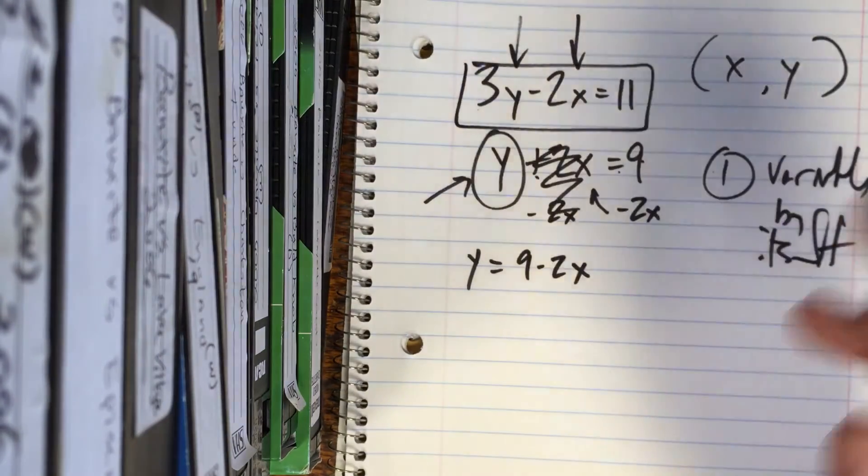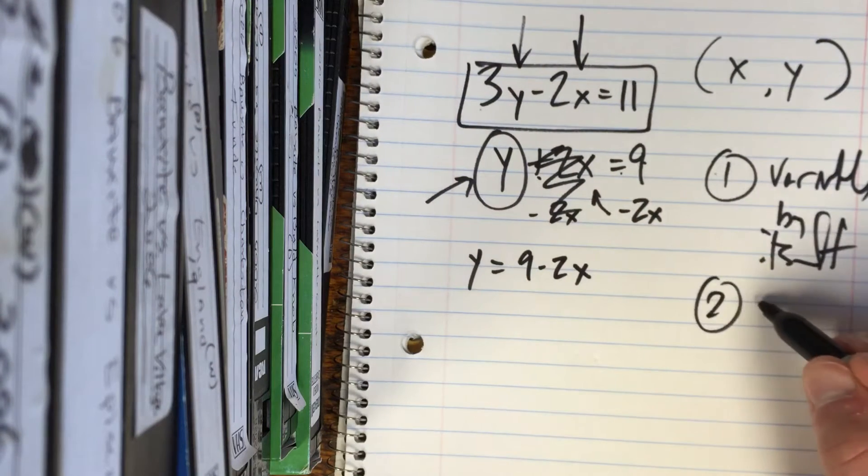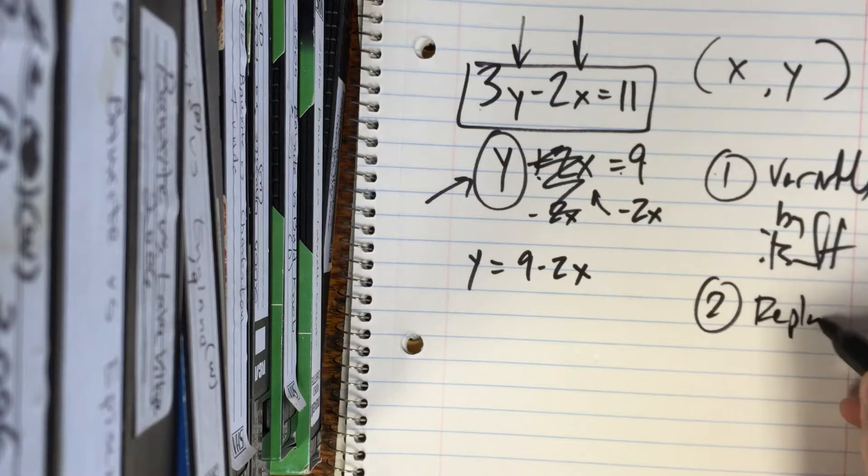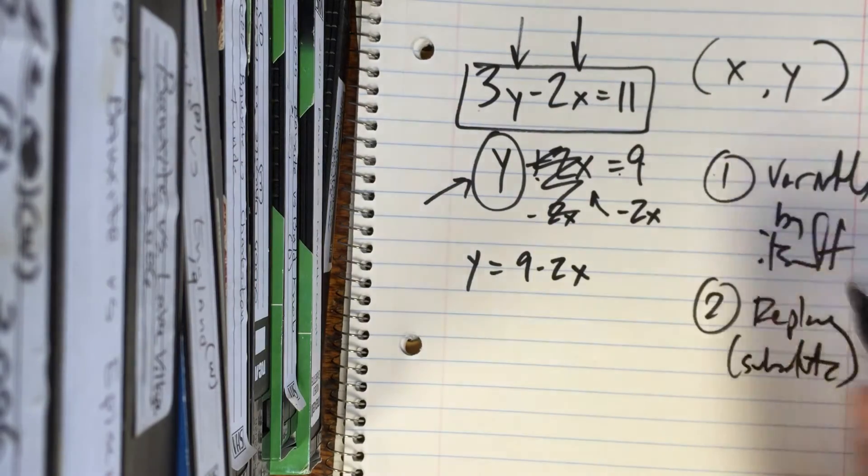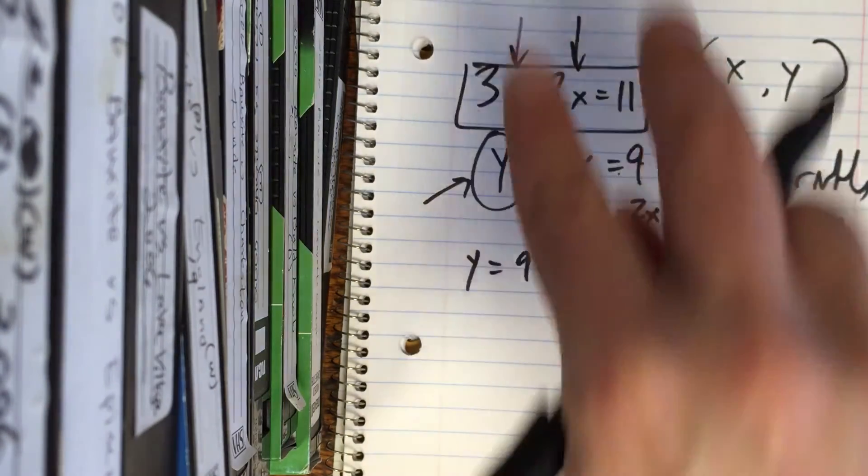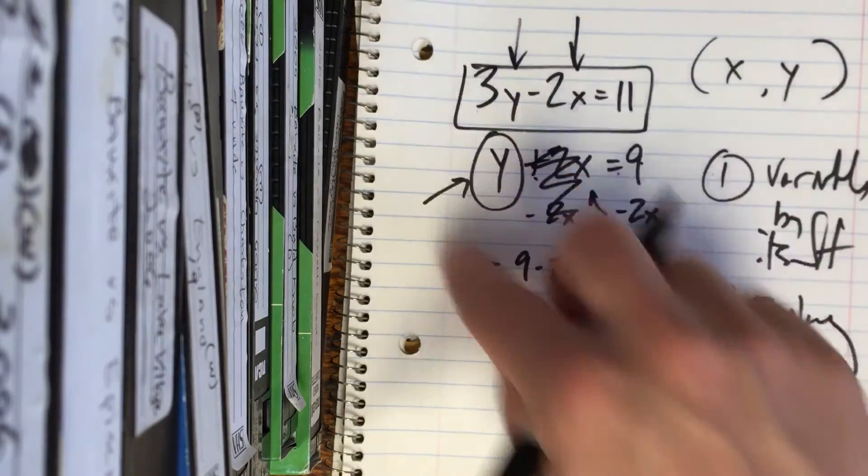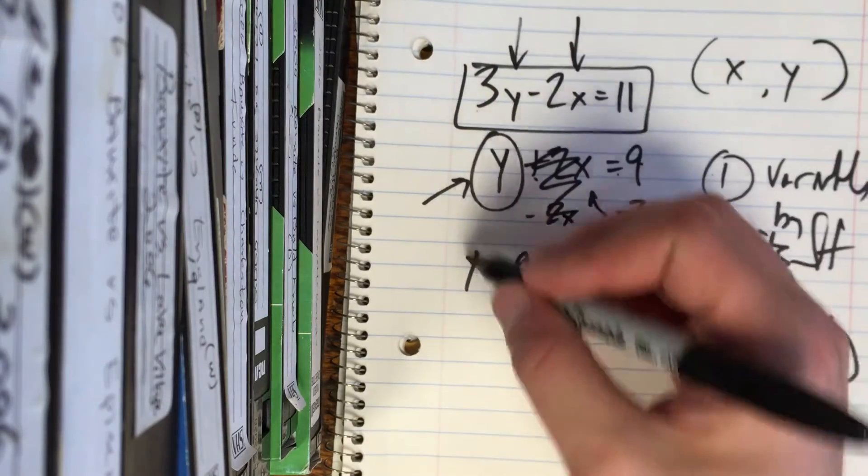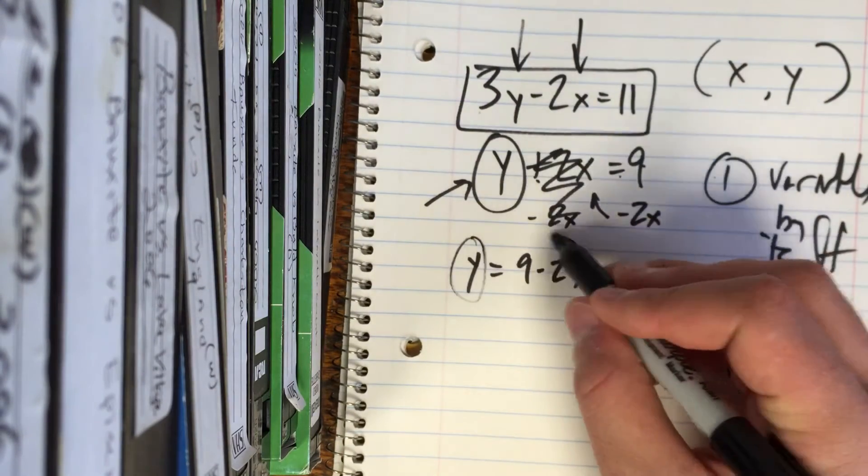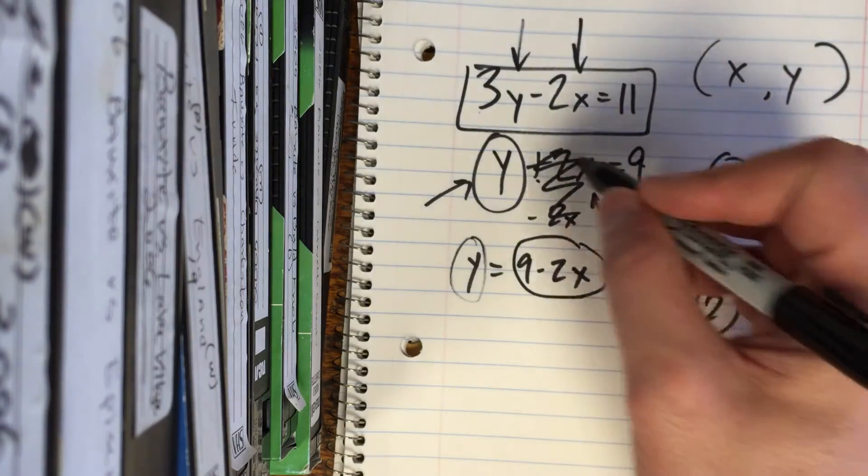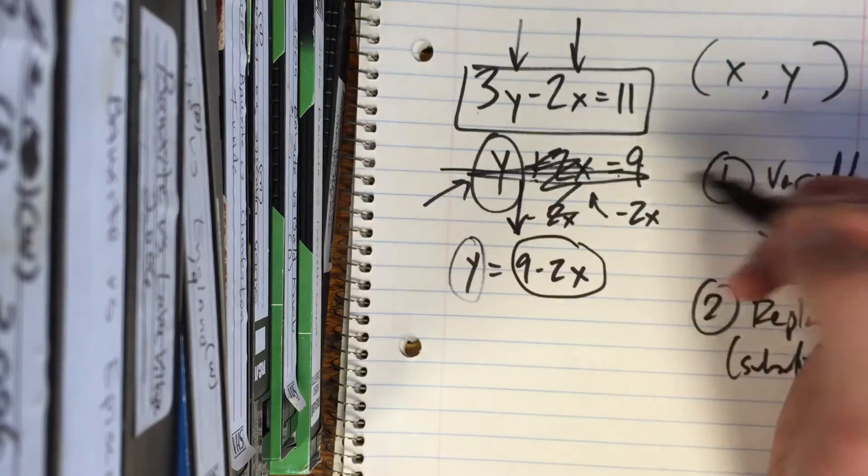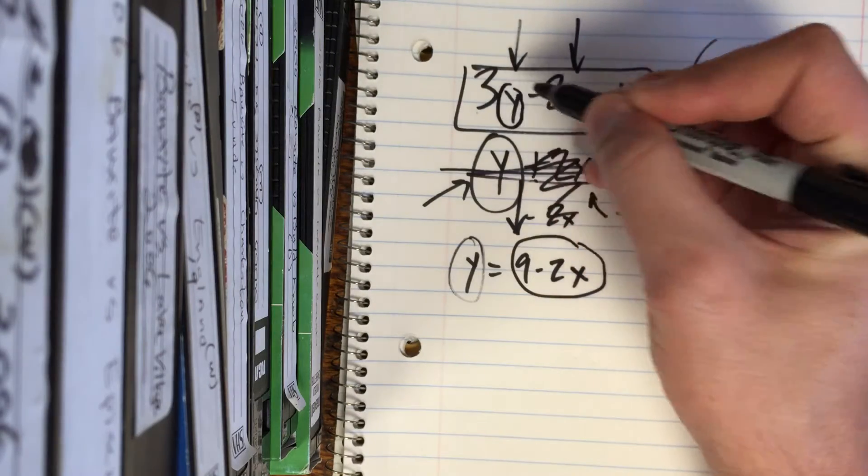And our other equation's up here. What we do from here is now you replace or, if you want, substitute. When you substitute something, you're taking something out and putting something else in. We know in our world of these equations, y is the exact same as that. y is equal to that. So out of this equation, which is now down here, I'm going to replace the y in the other equation.